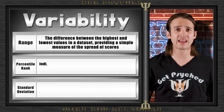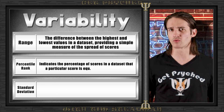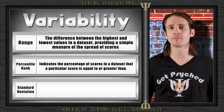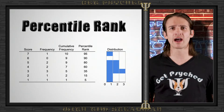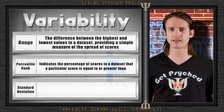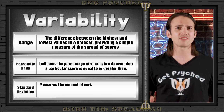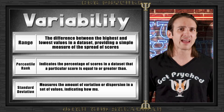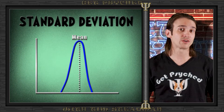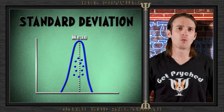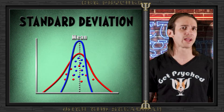The percentile rank indicates the percentage of scores in a data set that a particular score is greater than or equal to. For example, if your score is in the 90th percentile on a test, you scored higher than 90% of your peers. Next up, we have standard deviation, which is a more comprehensive measure that tells us how much the values in a data set deviate from the mean. A low standard deviation means the data points are clustered closely around the mean, while a high standard deviation means the data points are spread out over a wider range.